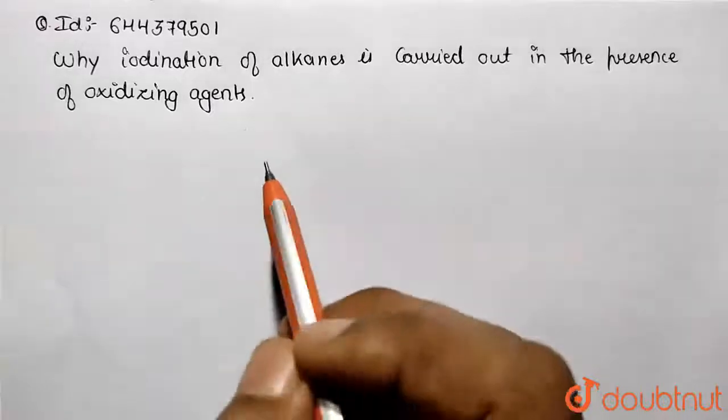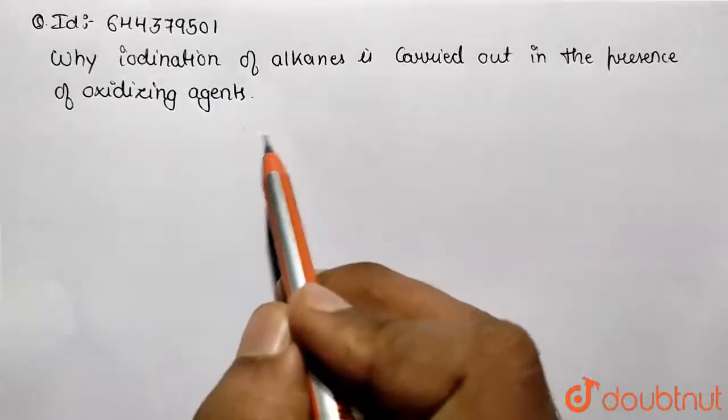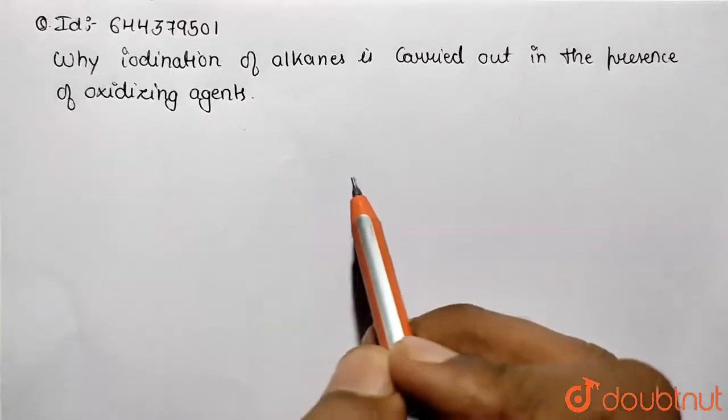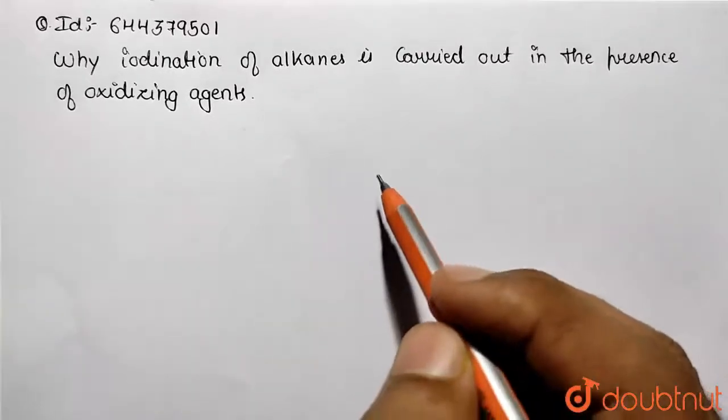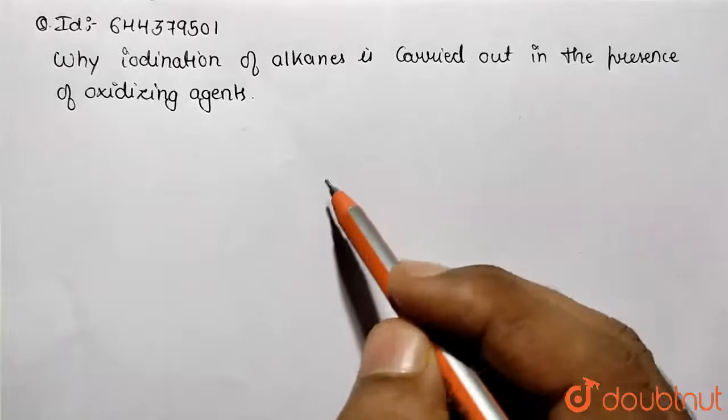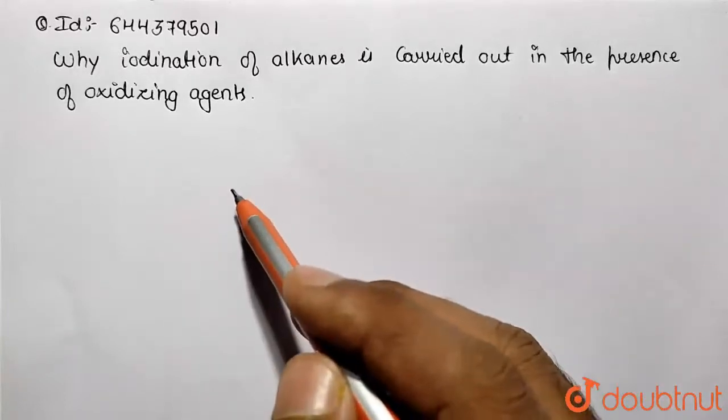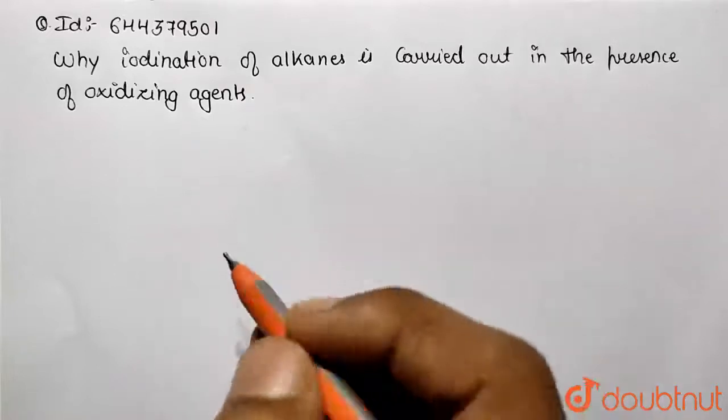So what is the basic reason? Since we know that the iodination process is going to be substituting iodine and it's going to be a slow and reversible process, what happens is the HI formed in that reaction is going to again decompose the corresponding product and it is being back converted to the corresponding alkane. So let's see with the help of a reaction.